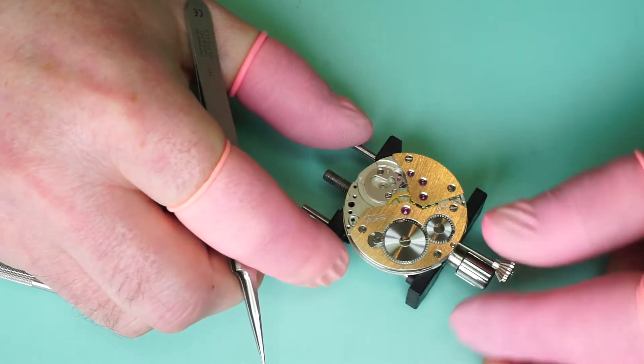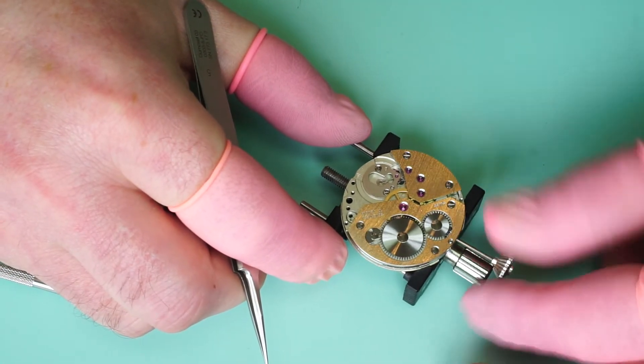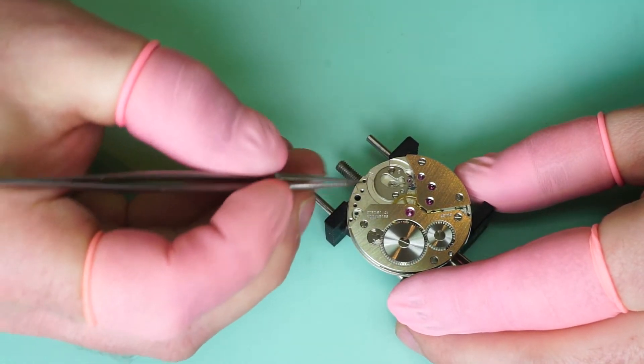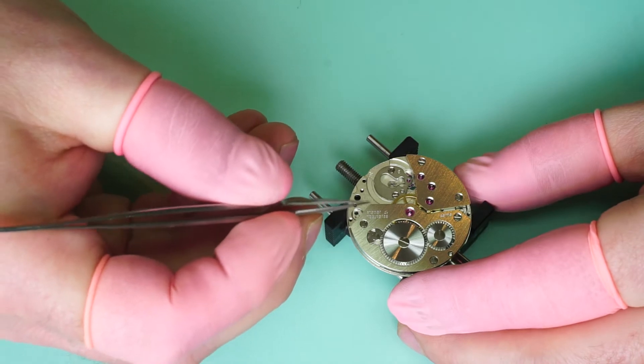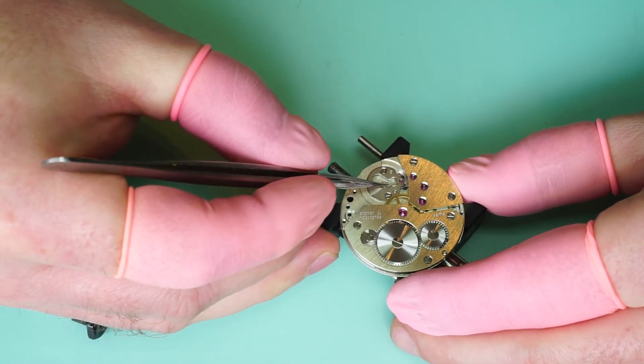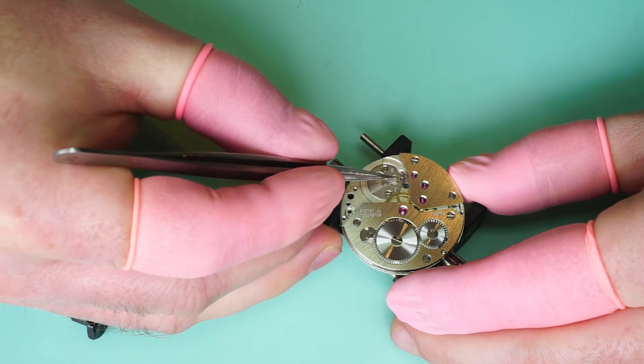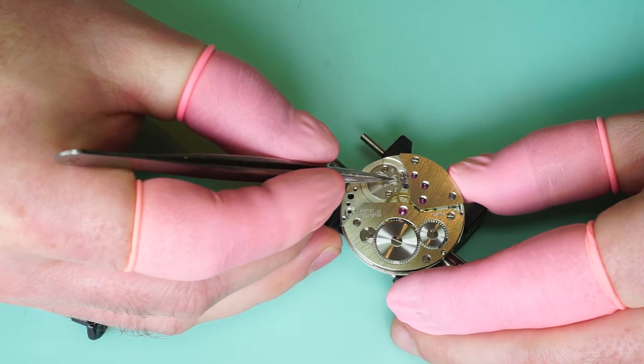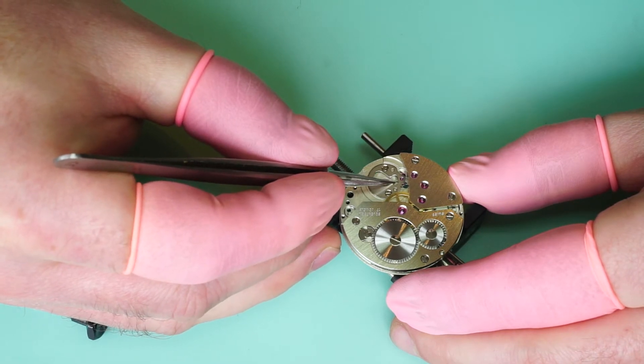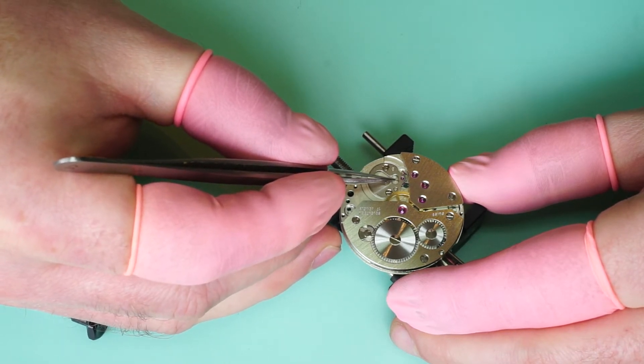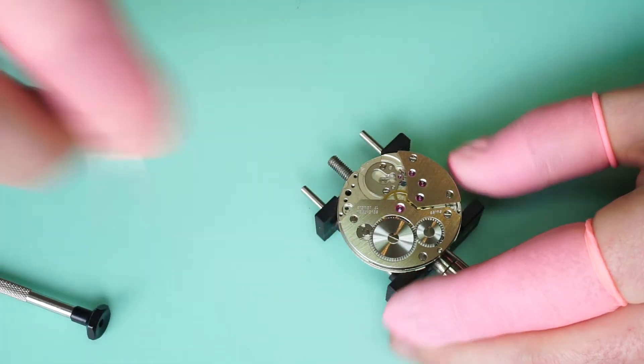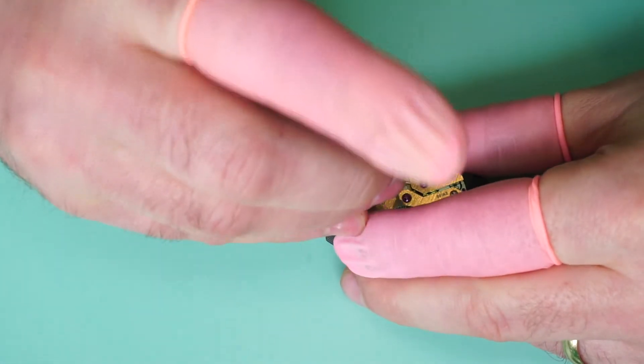And what we can do now is we can wind the movement a few turns, and if the pallets are correctly in position you should be able to snap them from one side to the other using the transmission of force through the train wheels. As we can see there it wants to snap left and right. So we know that the pallets have free movement. So we can tighten those screws down.